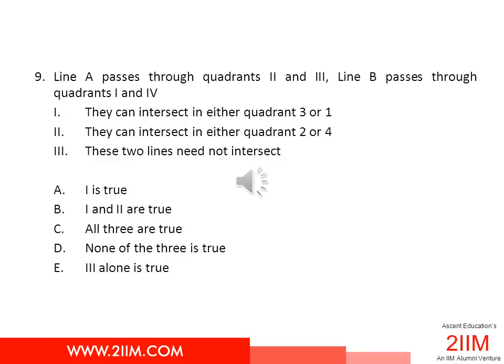asks us how many of these statements are true, which ones are true, and which ones are not true. Let's look at each of these statements and see if they are true or not. We'll try to construct lines A and B such that they can intersect in either quadrant 3 or 1, or 2 or 4.